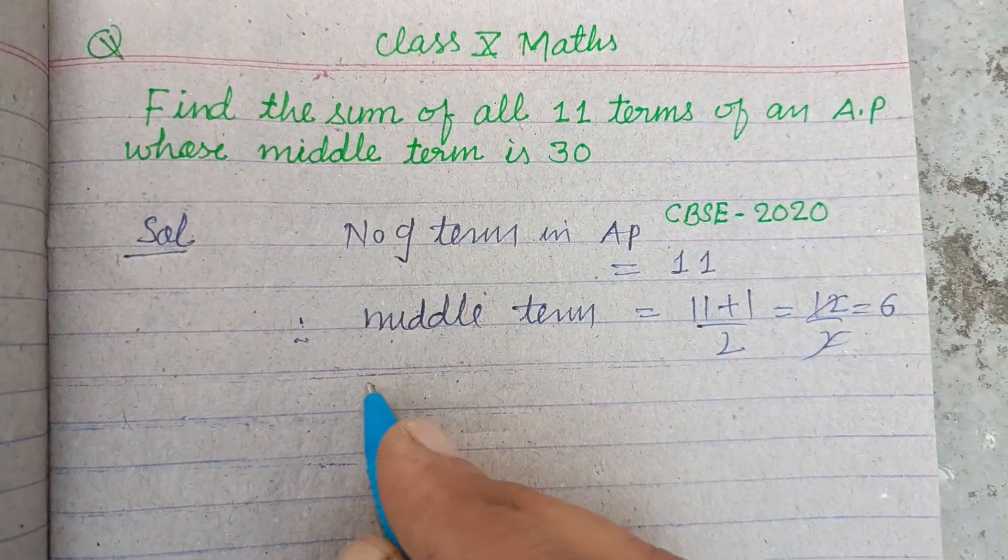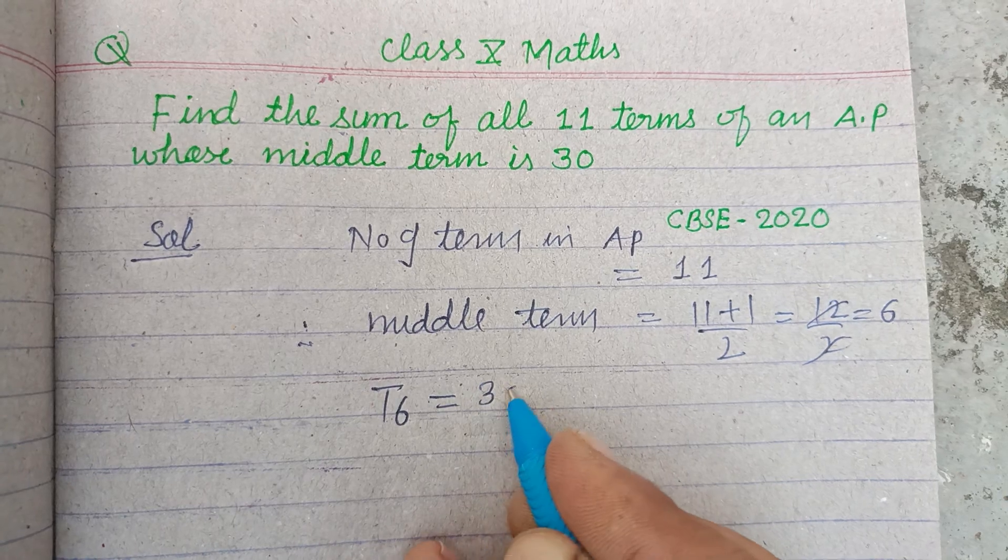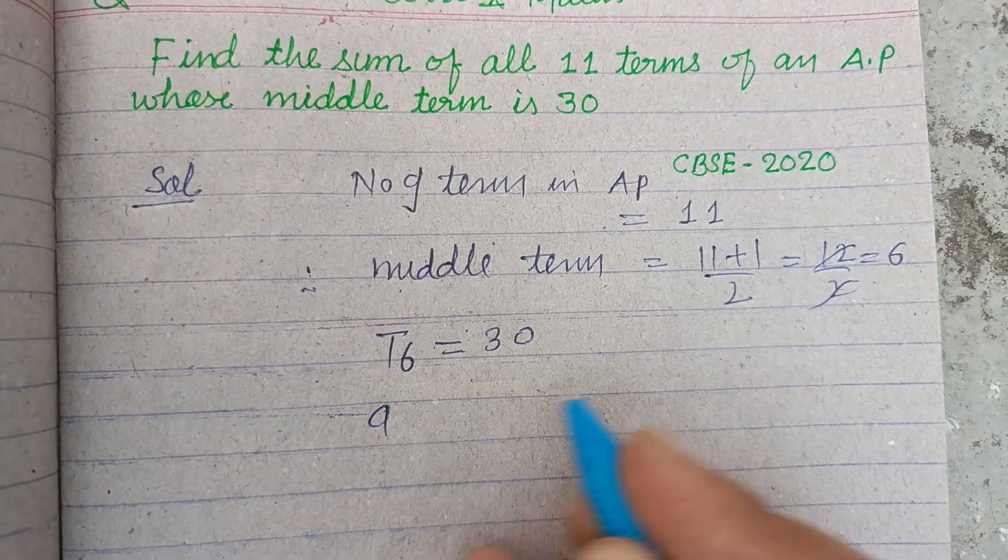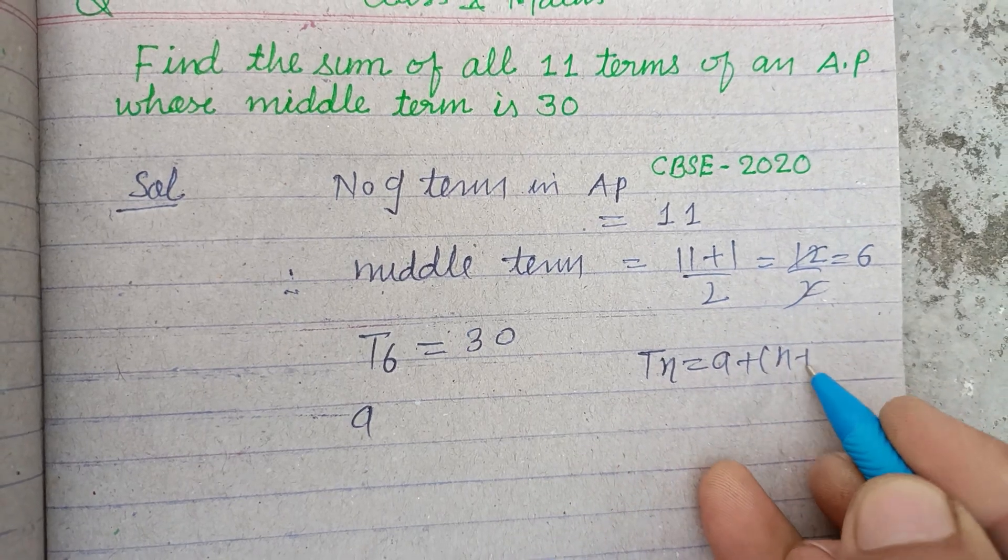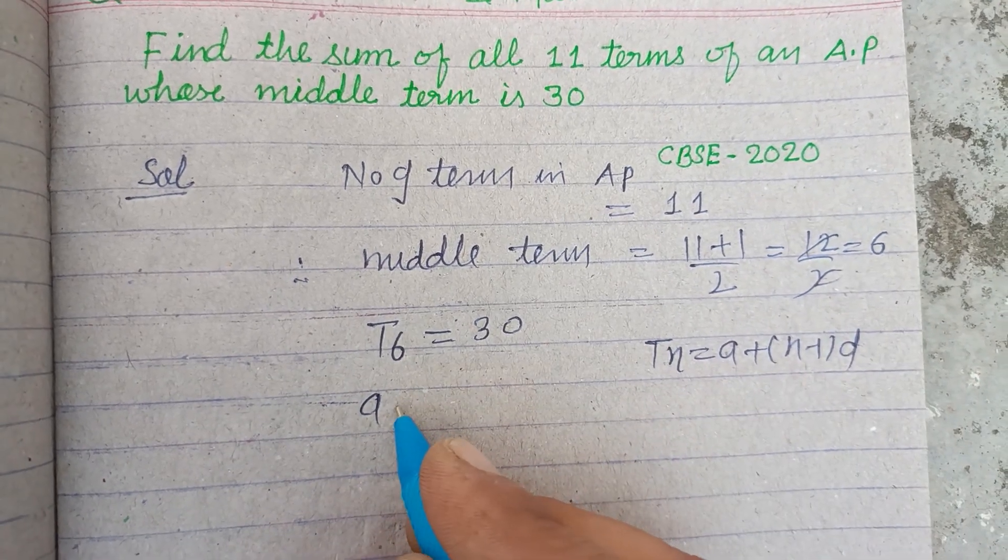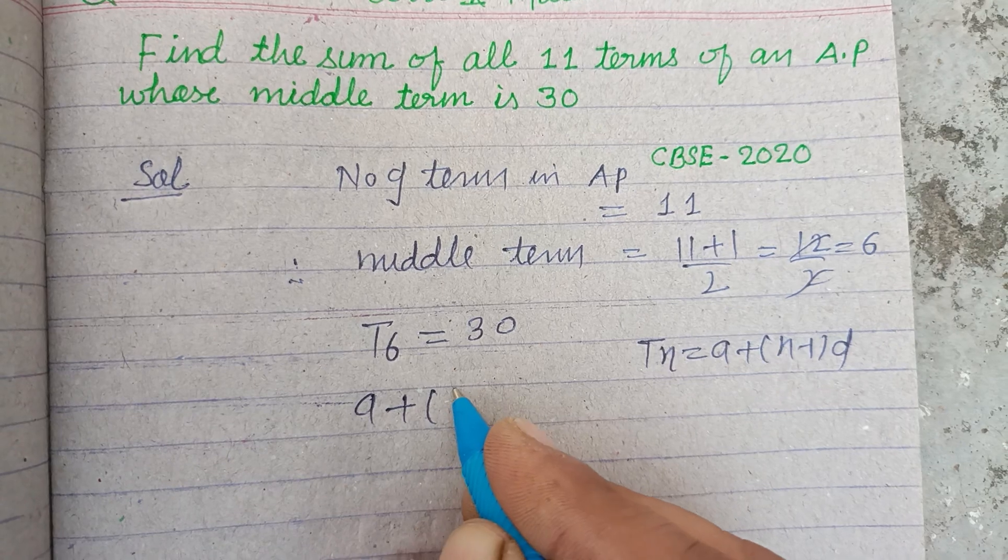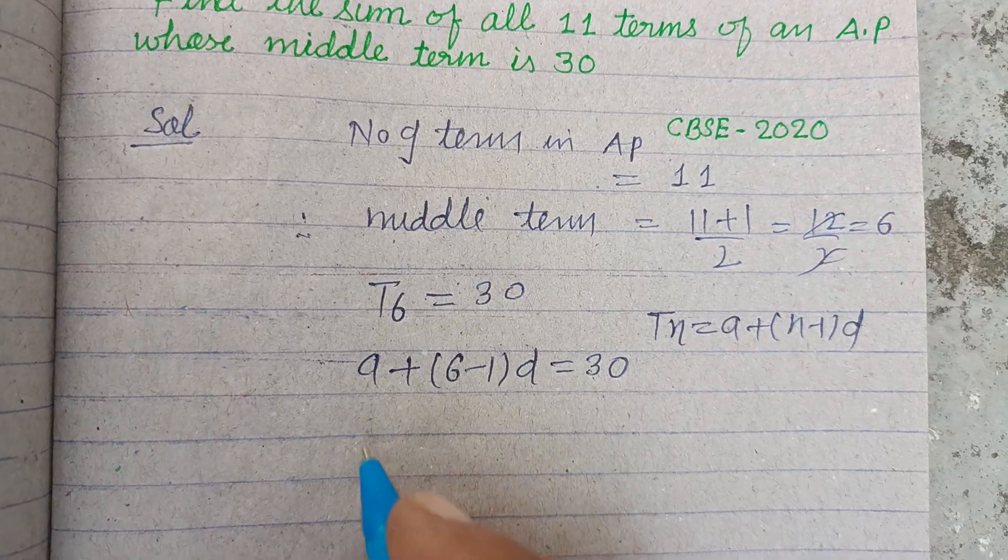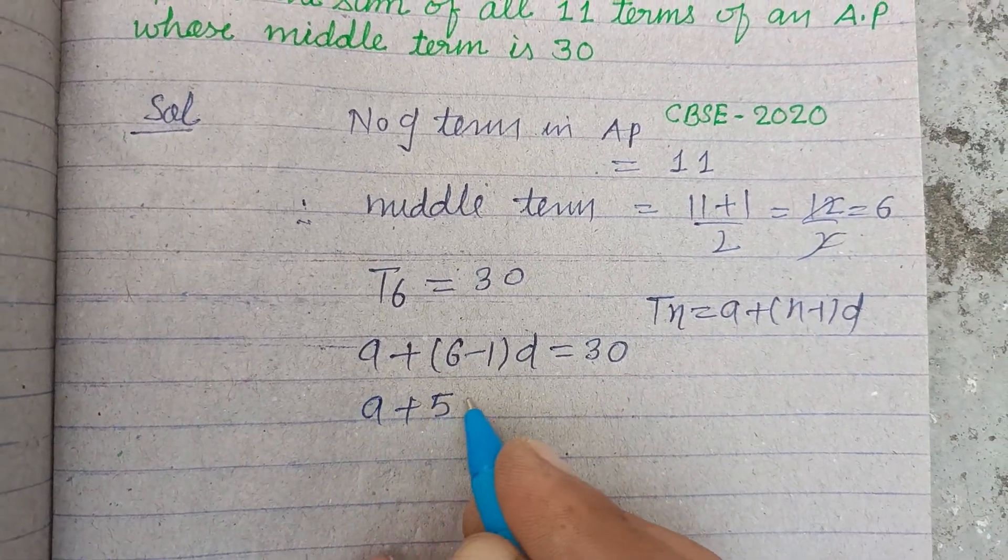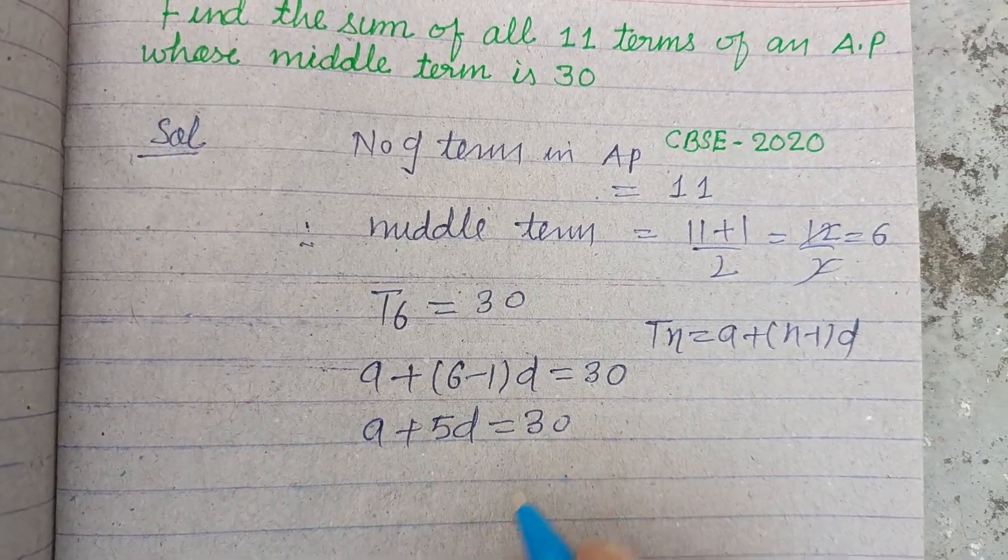And it is given to us that T6 = 30. You know that Tn = a + (n - 1)d. So a + (6 - 1)d is given to us as 30. Therefore, a + 5d = 30.